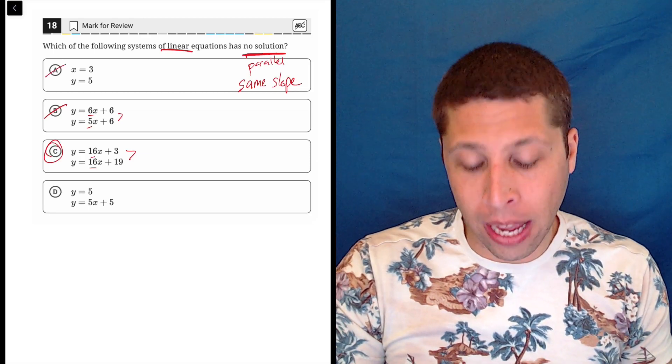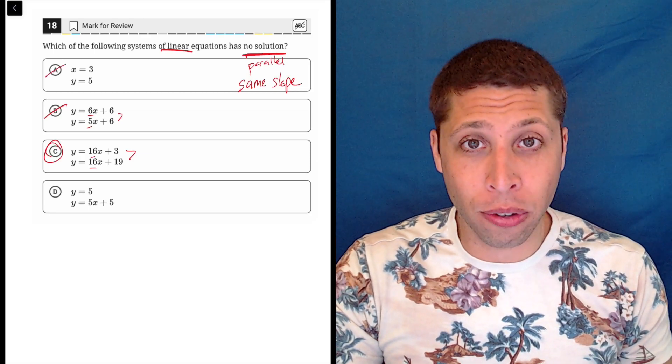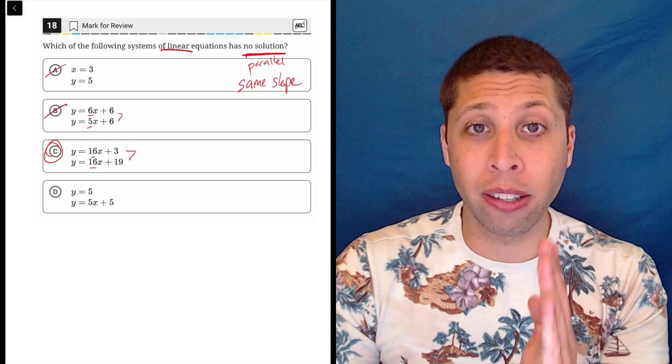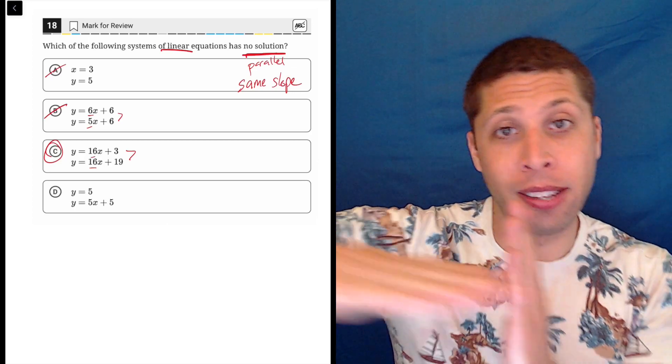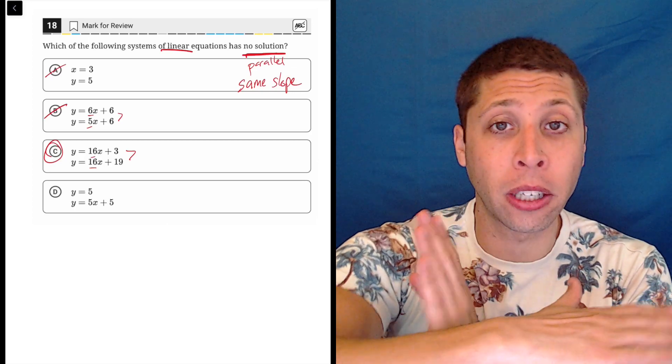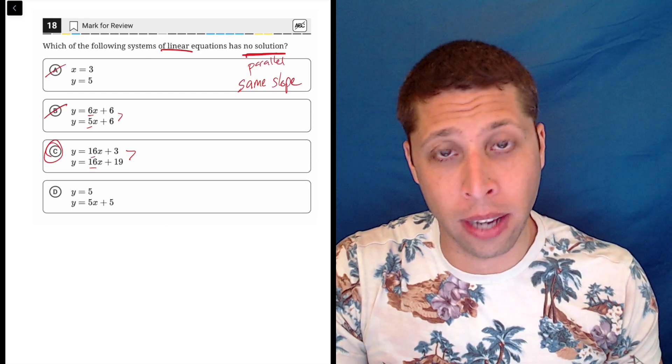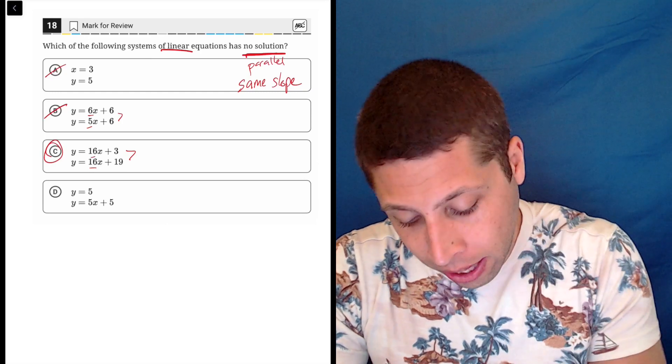Choice A is perpendicular lines. You have x equals 3, which is a vertical up and down line, and y equals 5 is a horizontal line. Those are perpendicular, but they still intersect one time and form a 90-degree angle, so that doesn't mean anything.